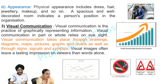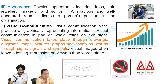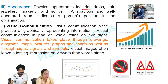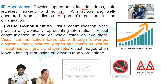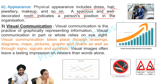Number three, Appearance. Physical appearance includes dress, hair, jewelry, makeup, and so on. A spacious and well-decorated room also indicates a person's position in the organization.